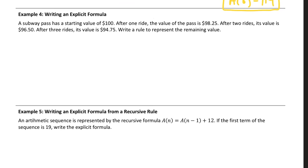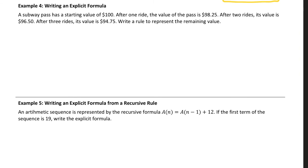Writing an explicit formula. An explicit formula, I think, is the most useful for applications. So in this example, example 4, a subway pass has a starting value of $100. After one ride, the value of the pass is $98.25. After two rides, its value is $96.50. After three rides, the value is $94.75. Write a rule to represent the remaining value. So to write that rule first, I'm going to describe this as a function. I always start with the first term. That pass is worth $100 when I start.